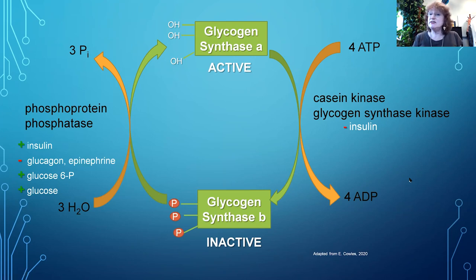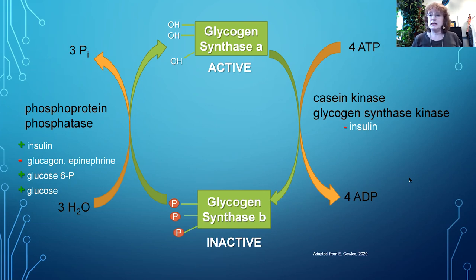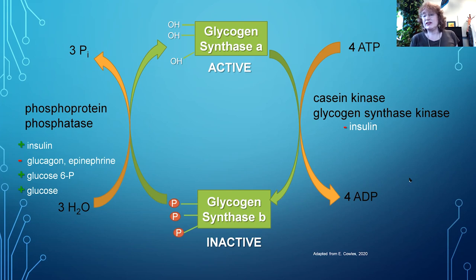Glycogen synthase has two different forms: the active form and the inactive form. The active form has no phosphates on it, while the inactive form has three phosphates attached. You can think about phosphate as being the off switch — if glycogen synthase has phosphate groups on it, it doesn't work. The enzyme that puts on the phosphates to turn glycogen synthase off involves two steps: casein kinase, which in turn phosphorylates glycogen synthase kinase, which then puts on the phosphate. This is why it requires two ATPs.